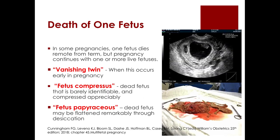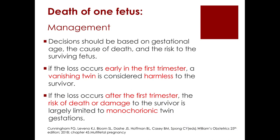In some pregnancies, one fetus dies remote from term while pregnancy continues with one or more live fetuses. The term vanishing twin is used for multifetal gestations where one fetus dies very early in pregnancy. Fetus compressus describes a dead fetus that is barely identifiable and appreciably compressed, while fetus papyraceus refers to a dead fetus remarkably flattened through desiccation. Decisions should be based on gestational age, cause of death, and risk to the surviving fetus. If loss occurs early in the first trimester, the vanishing twin is considered harmless to the survivor.